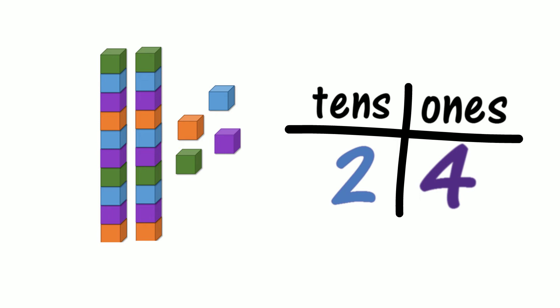Does the two tell us we have two tens? Can you see the two tens? Does place value tell us we have four ones? Which digit in 24 tells us we have four ones? Does the four in 24 tell us we have four ones? Can you see the four ones? What are we doing to the two tens and the four ones to make 24? Are we adding the two tens and the four ones to make 24?